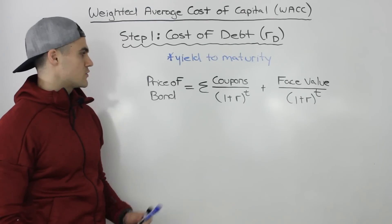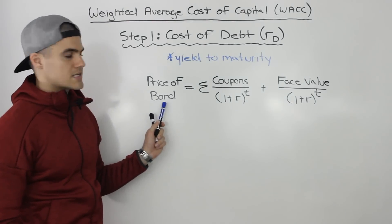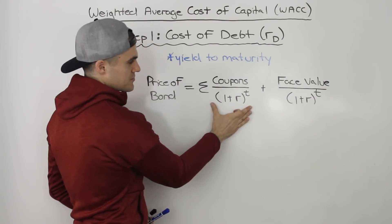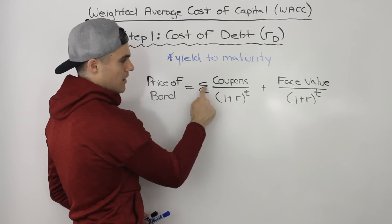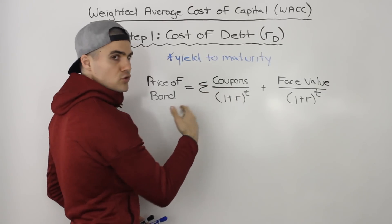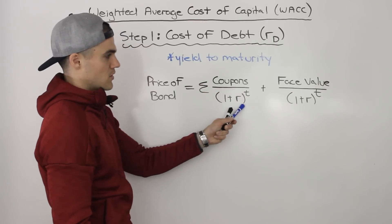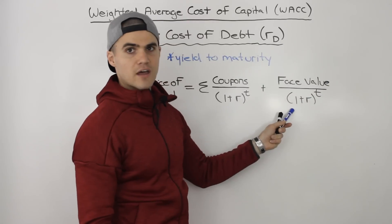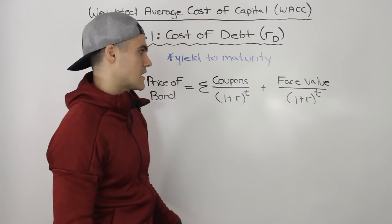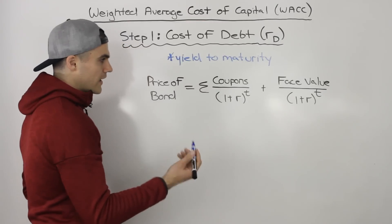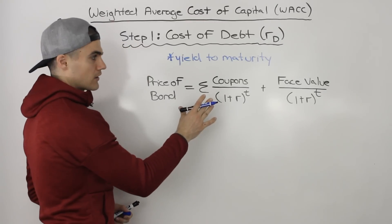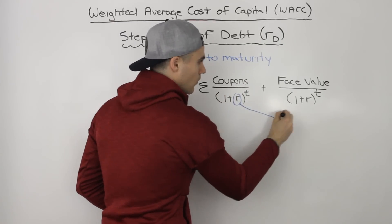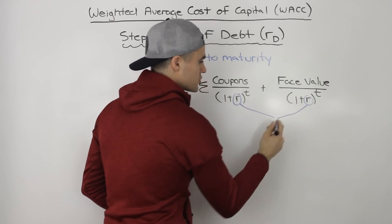To do a little review: if you remember, the price of a bond is equal to the present value of all the coupons. This expression here represents the sum of all of the coupons in the future discounted to time zero, plus the present value of that face value at the end, discounted to time zero as well. And the rate at which we are discounting those coupons and that face value to get the price of the bond — this R here — is the yield to maturity.